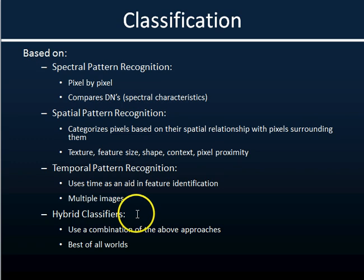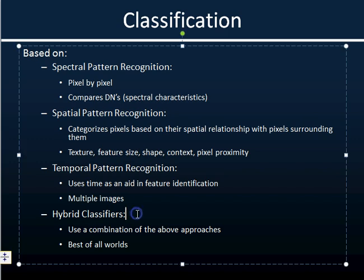Really, the best are hybrid classifiers, which utilize all of these approaches — spectral, spatial, and temporal — in conjunction, all done in tandem. These are what are providing the most accurate classifications out there.